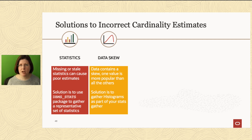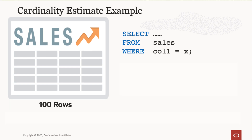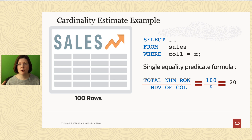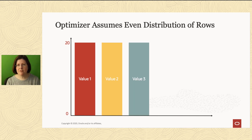Is there a data skew in one of the columns in my tables? By default, the optimizer assumes we have an even distribution of rows to values in a column. If we remember the earlier example — selecting from a table where column one equals a value — the cardinality estimate divides the total number of rows by the number of distinct values in that column. The optimizer assumes a uniform distribution: with five distinct values and a hundred rows, it assumes 20 rows have value one, 20 have value two, 20 have value three, and so on.